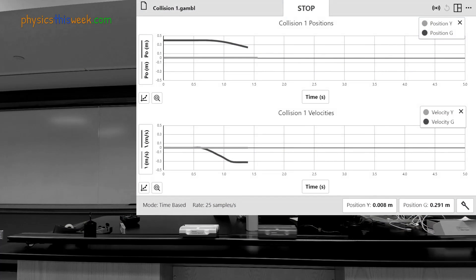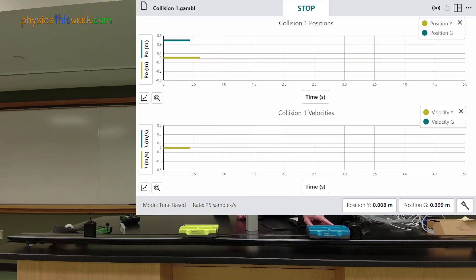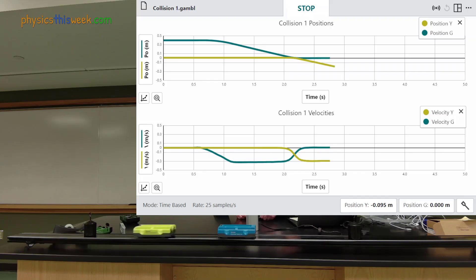Each collision in the experiment is slightly different. In the example here the yellow cart is initially at rest in the center of the track. The green cart comes in from the right and collides with the yellow cart. After the collision the green cart loses most of its speed and its momentum. This is transferred to the yellow cart which then moves off to the left.